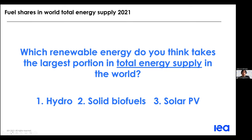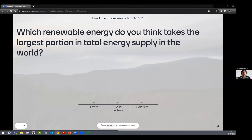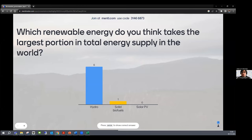You can go on Menti and enter the code 31466873. And the question is: which renewable energy do you think takes the largest portion in total energy supply in the world? Pay attention to what we are talking about — we are talking about the total energy supply, which is an important concept in energy statistics. For renewables in particular, it's very important how we classify the different products and what are the methodology and assumptions that we take.